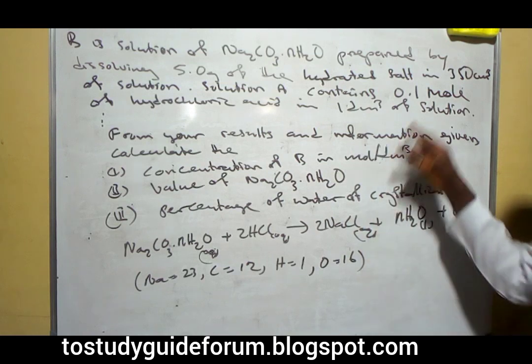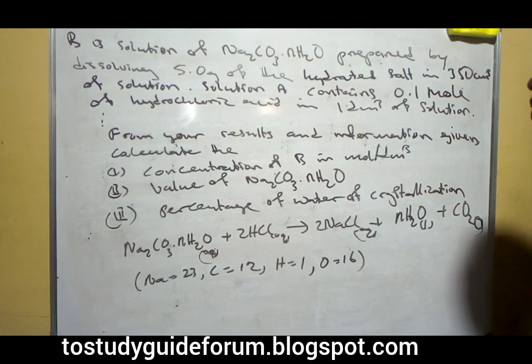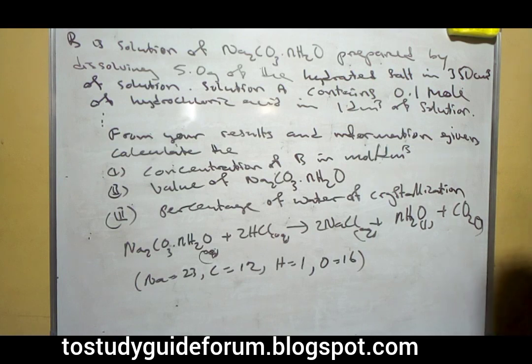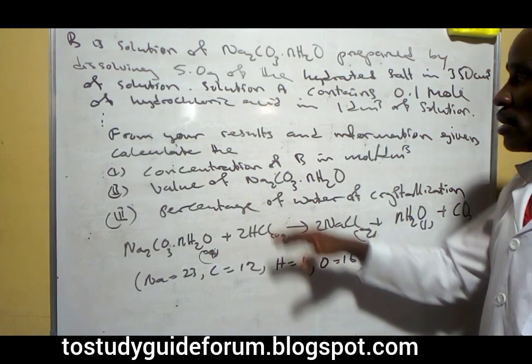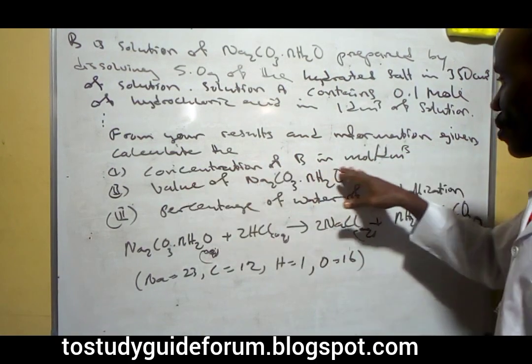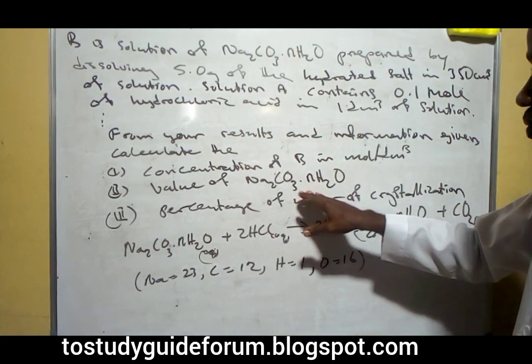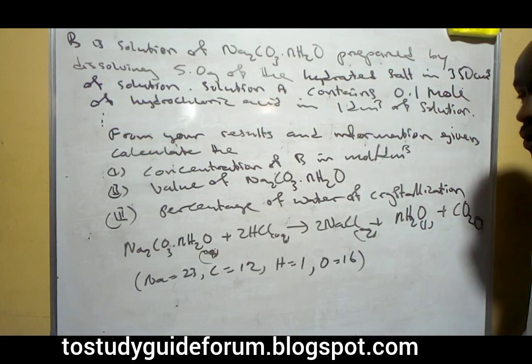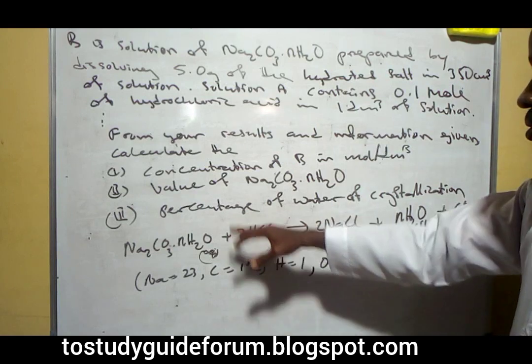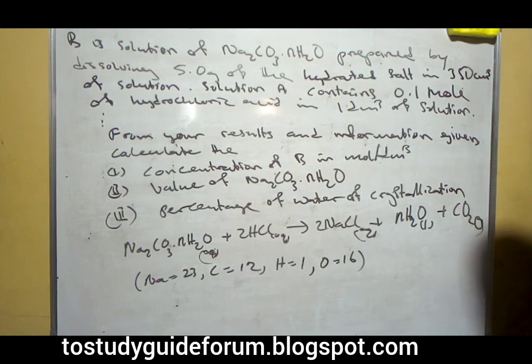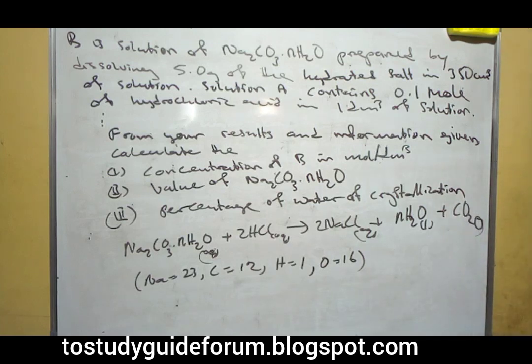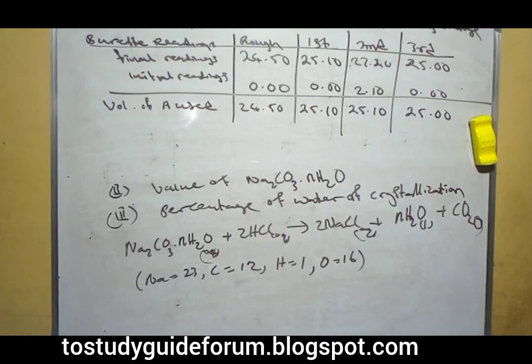The question says: this is a solution of sodium trihydrocarbonate and hydrated water prepared by dissolving 5 grams of hydrated salt in 250 cm³ of solution. Solution A contains 0.1 mole of hydrochloric acid in 1 dm³ of solution. From the results and information given, I placed the concentration of B in mole per dm³, the value of the hydrated salt, and then you have the percentage of water of crystallization.